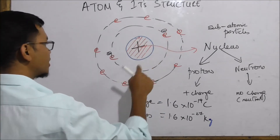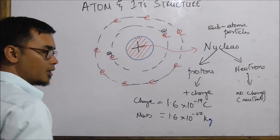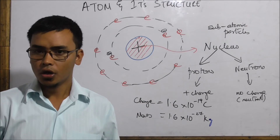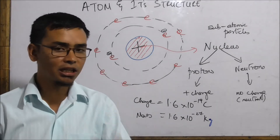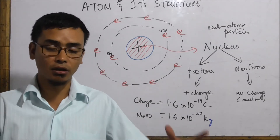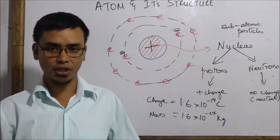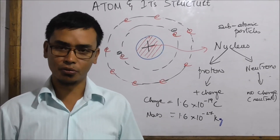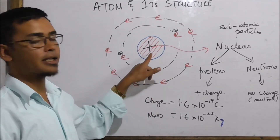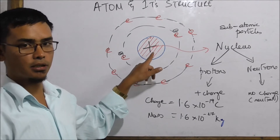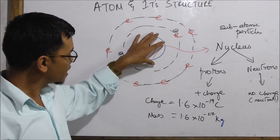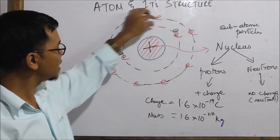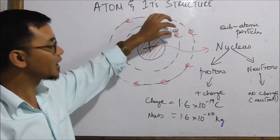This is like the eight planets that revolve around the sun — the sun acts as the nucleus. Although the electrons are negative, they orbit the nucleus.